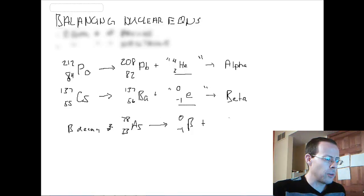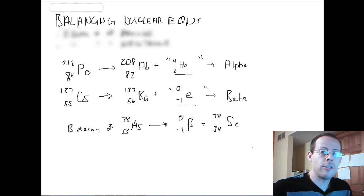What we're going to add to that is 78 equals, think of the arrow sign as an equal, 0 plus what? 78. And then the bottom is 33 equals minus 1 plus what? It's going to be 34. So if we look at the periodic table to find out what this is, we'll find that it is selenium. And that is simply balancing nuclear equations.